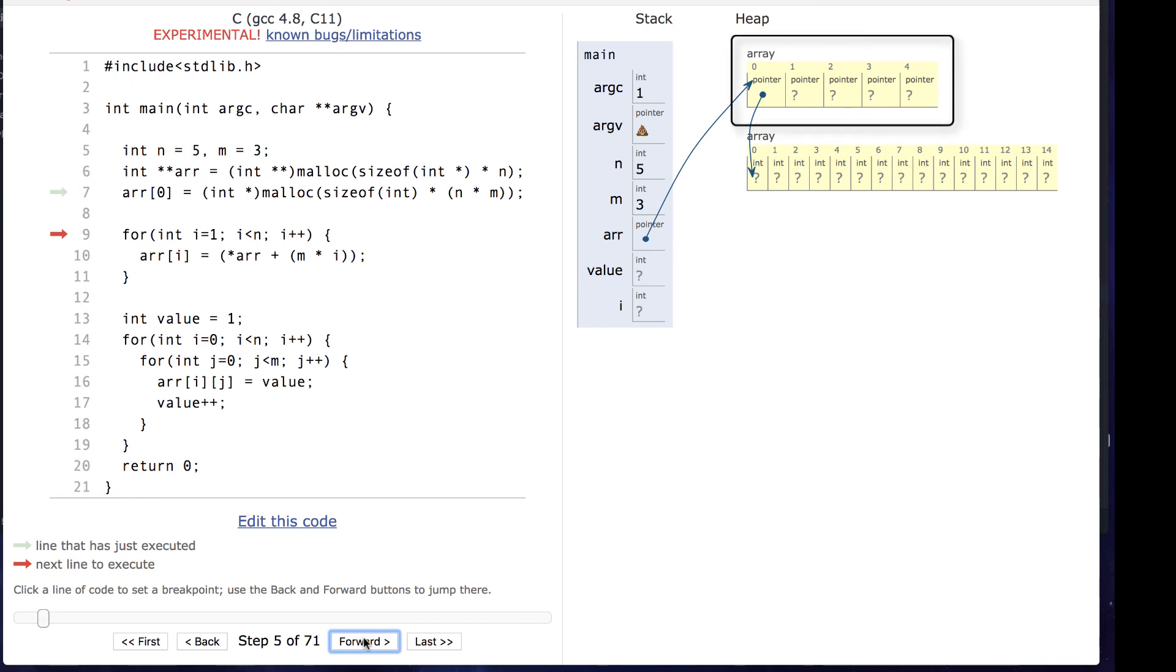Now, we still need to set up all of these other pointers. The first pointer points to zero. The second pointer will need to point to the fourth element, and so on. This is just done through some clever pointer arithmetic.